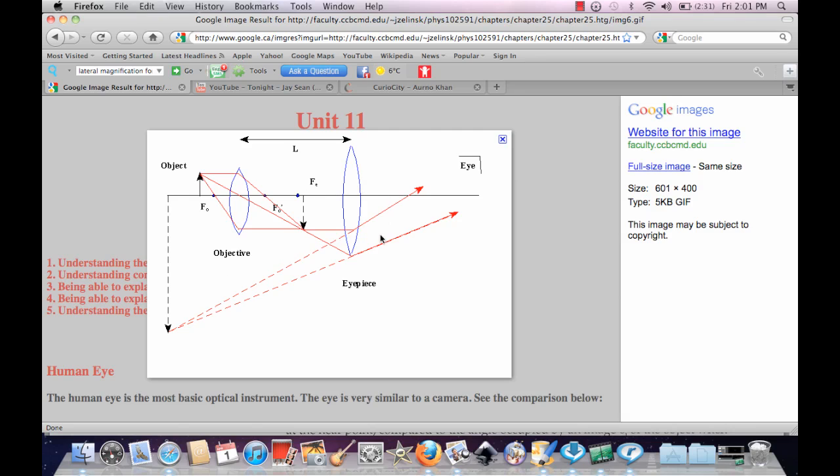The magnification formula is basically M equals the distance of the image divided by the distance of the object, which is equal to the height of the image divided by the height of the object.